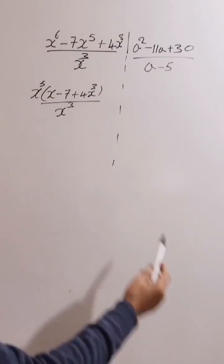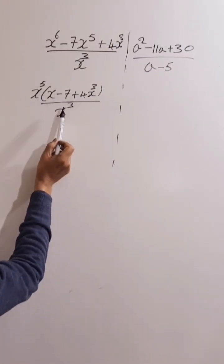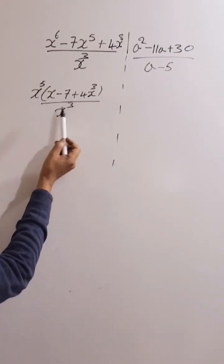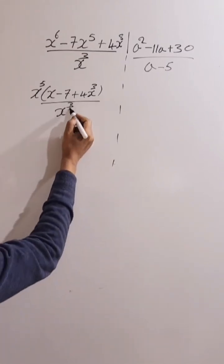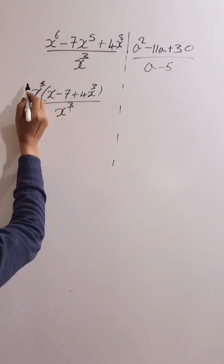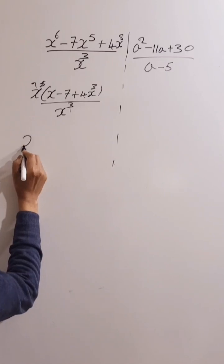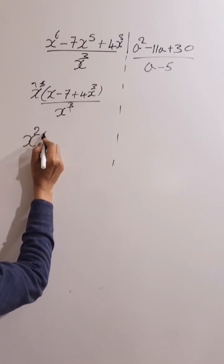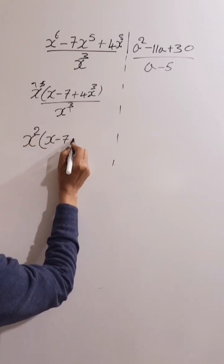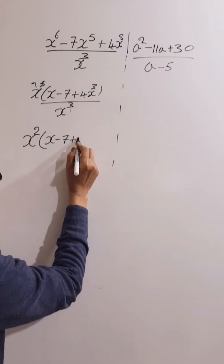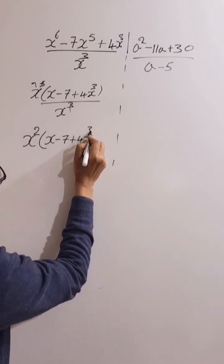Okay, now if you divide x to the power five by x to the power three, it will give us x squared. So x squared times x take away seven, plus four x to the power three. That is the simplest form of this one.